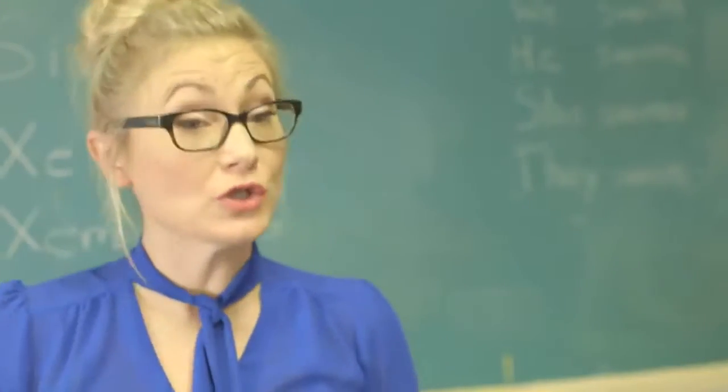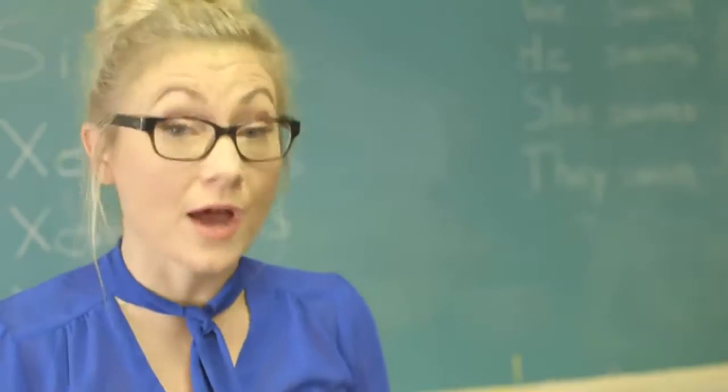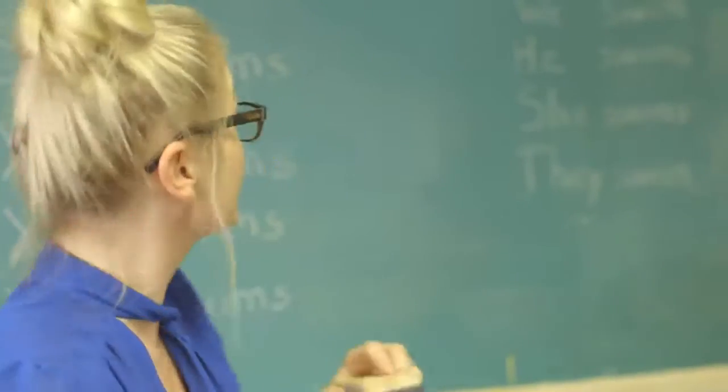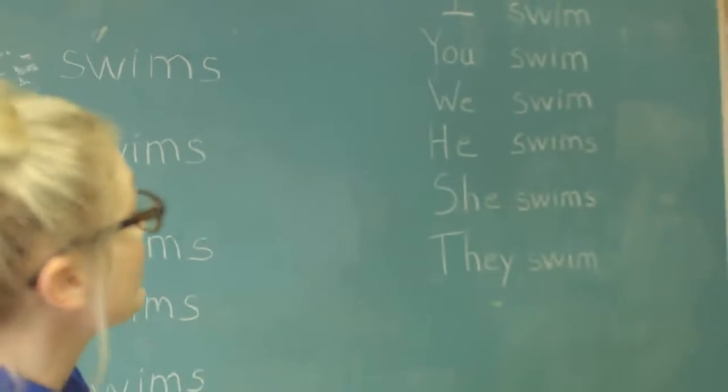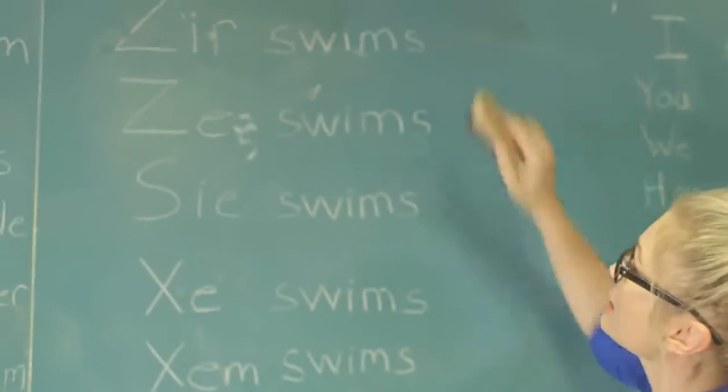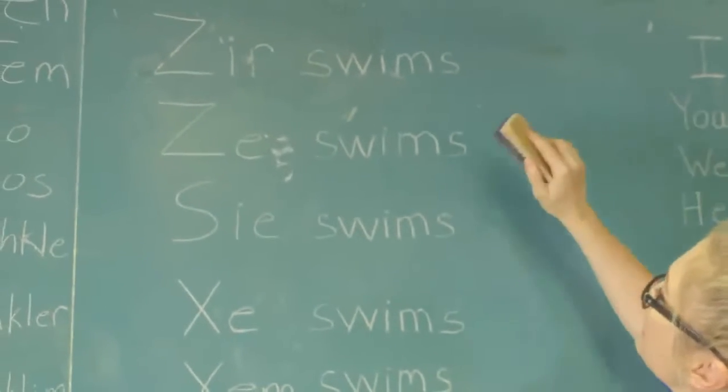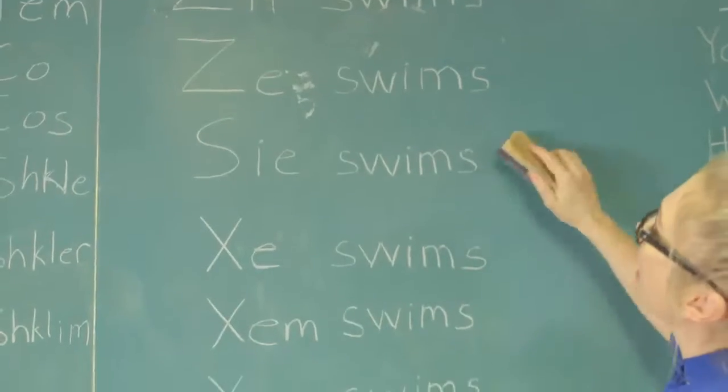Now, let's conjugate the verb to swim with the other pronouns. She swims, they swim, ze swims.